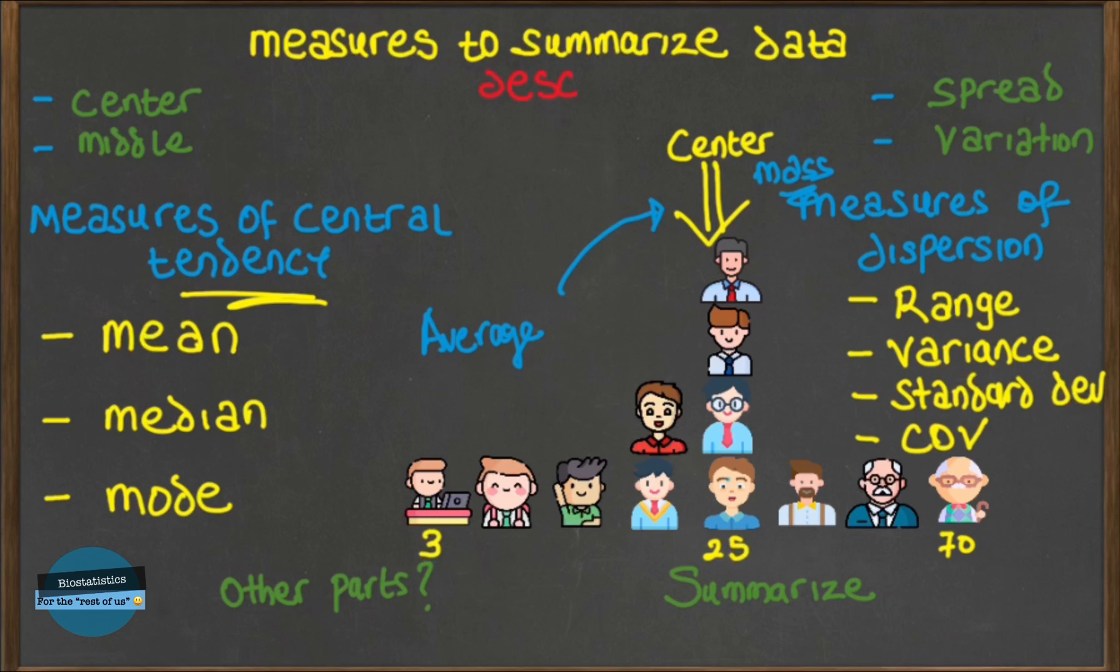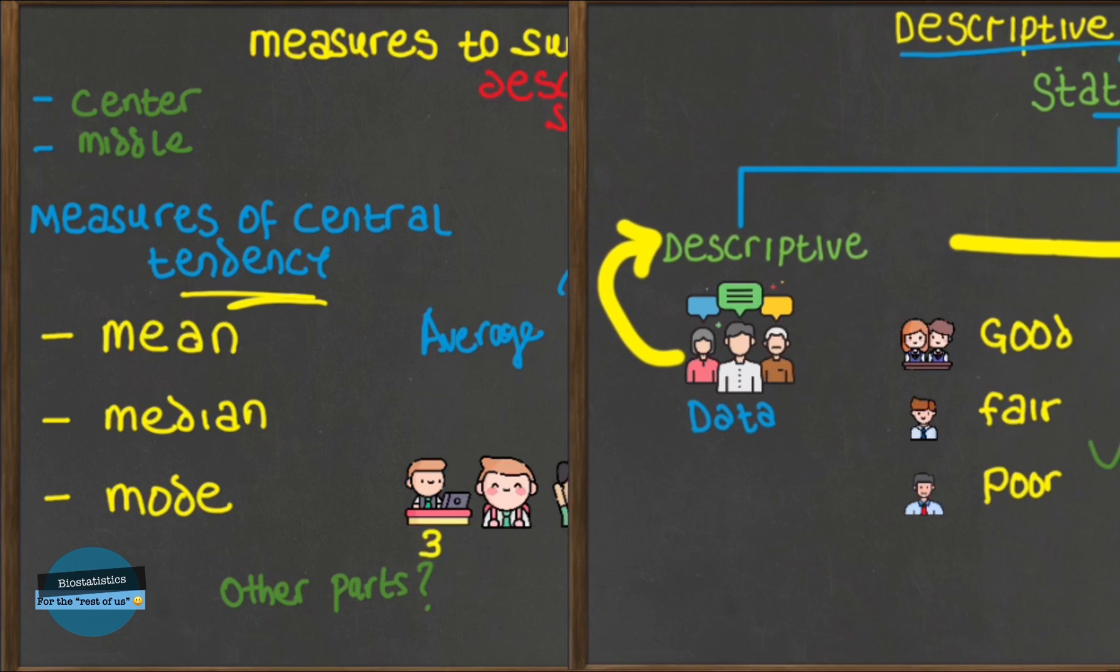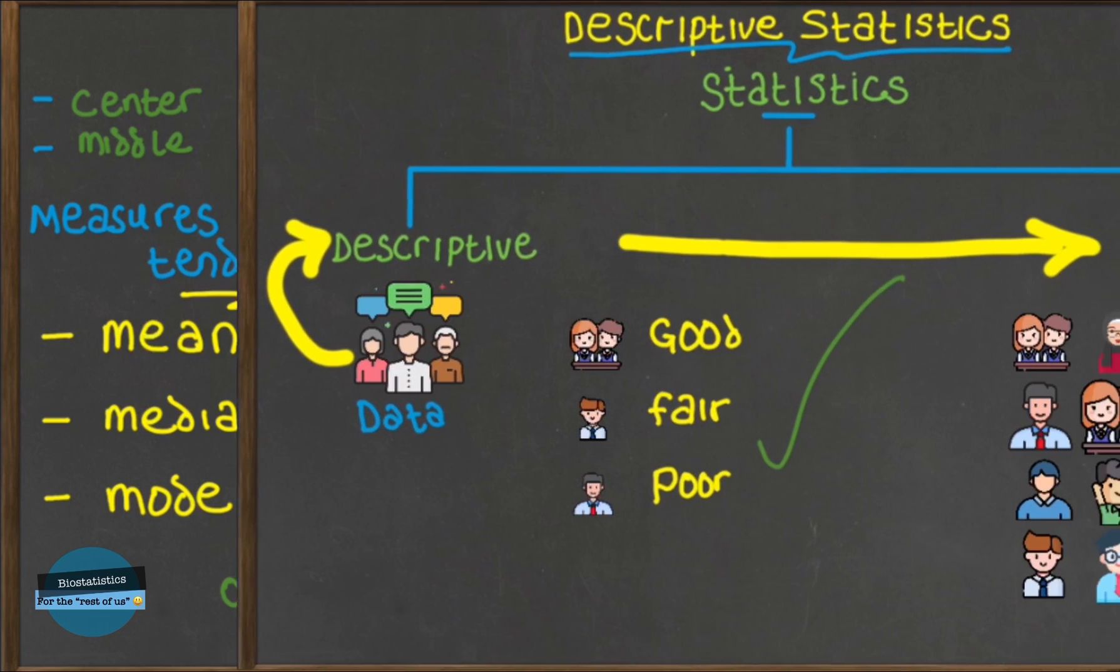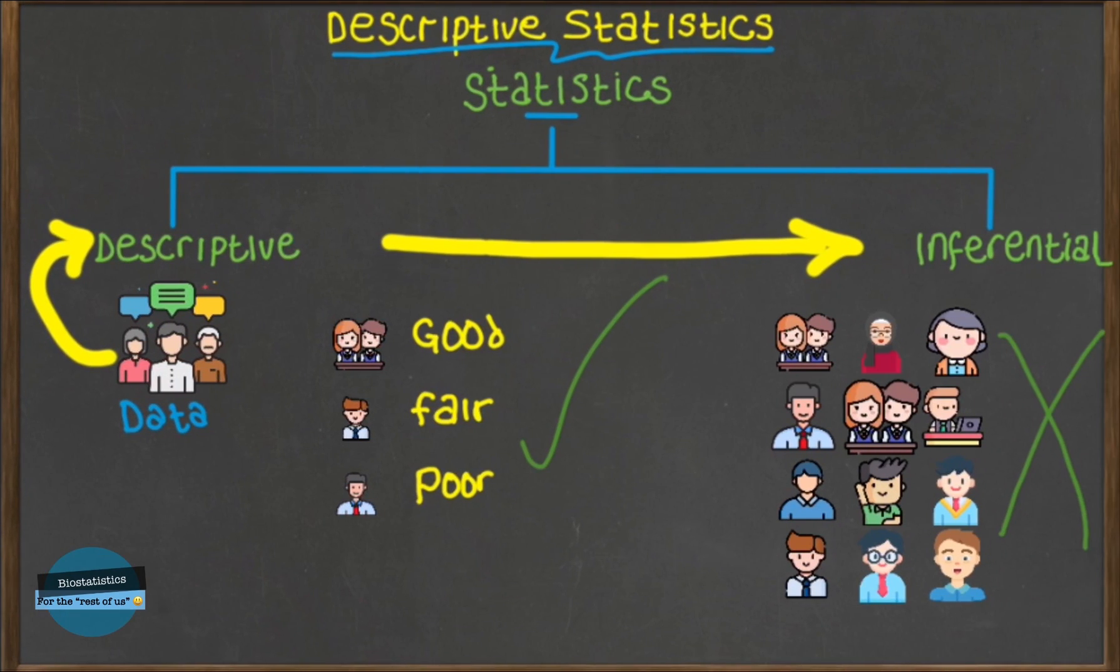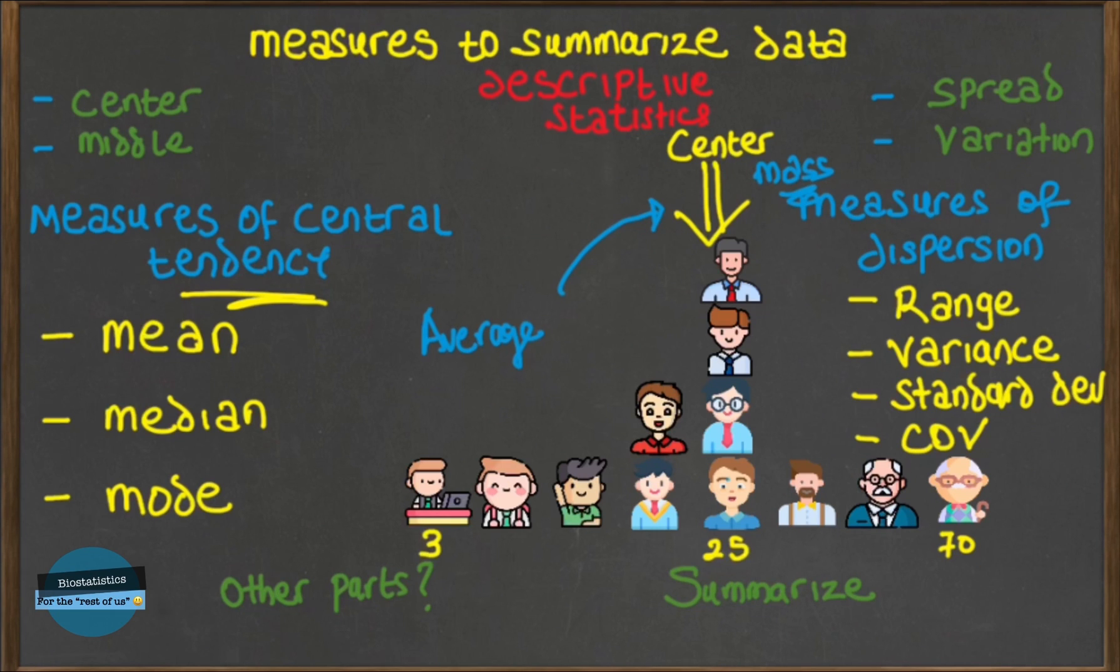So in summary, this is the general overview of descriptive statistics, also called summary statistics. We said there are two branches of statistics: descriptive statistics and inferential statistics. And for descriptive statistics, generally divided into two: the measures of central tendency and the measures of dispersion. For the measures of central tendency we have examples like the mean, median, and the mode. And for the measures of dispersion we have the range, variance, standard deviation, and coefficient of variation.